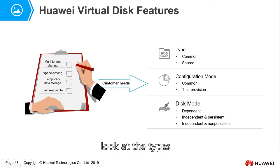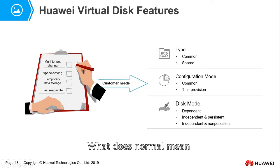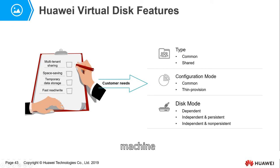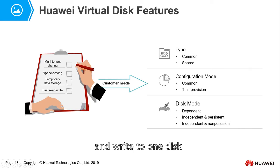First, look at the types. Types can be divided into normal and shared. Normal means the virtual machine disk is dedicated to one virtual machine. Shared means several virtual machines can read and write to one disk.